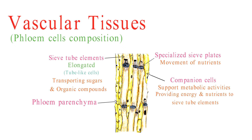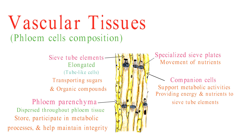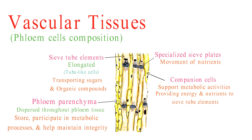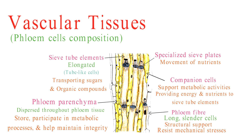Phloem parenchyma cells are dispersed throughout the phloem tissue and serve various functions. These cells store starch and other substances, participate in metabolic processes, and help maintain phloem integrity. Phloem fibers are long, slender cells that provide structural support to the phloem tissue. Their strong walls enhance the overall stability of the phloem and help resist mechanical stresses.